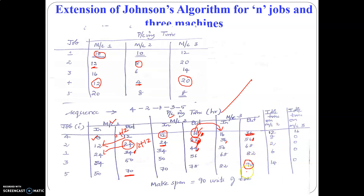This is the makespan time. Now let us find the idle time on machine 2 and machine 3. Machine 1 will never remain idle — every job is processed in machine 1 first and then moves on to machines 2 and 3. For the first 12 minutes when job 4 is being processed in machine 1, machine 2 is idle, so the first idle time is 12. Next, machine 2 is available at the end of the 16th minute but the next job enters only at the end of the 24th minute, so 24 minus 16 is 8 minutes idle.